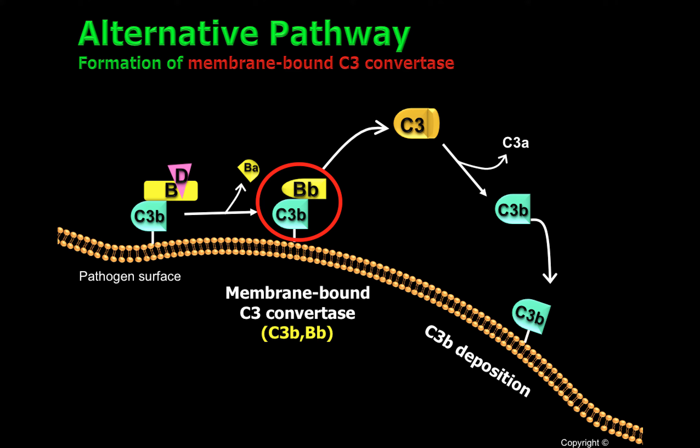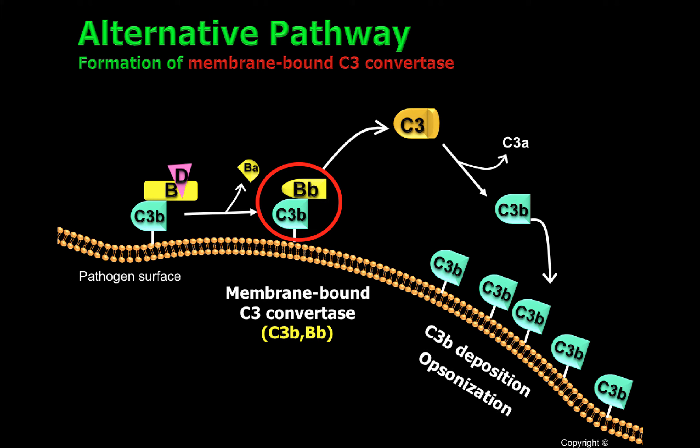The C3 convertase is able to cleave several molecules of C3, depositing several molecules of C3B on the cell surface. Because C3B is able to promote phagocytosis, it is considered an opsonin. Therefore, C3B on the cell surface participates in the process of opsonization, promoting or enhancing the phagocytosis of pathogens.